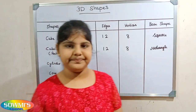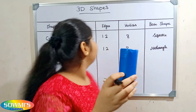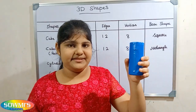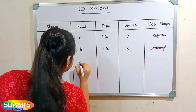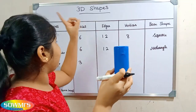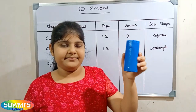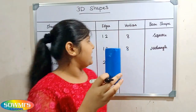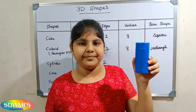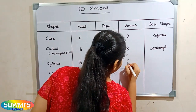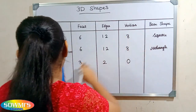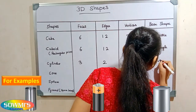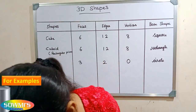Next we will see the cylinder. We count the faces: there are two flat faces and one curved face, so there are three faces in a cylinder. Next we count the edges: there are two edges in a cylinder. There are no vertices in a cylinder. The base shape of cylinder is circle.